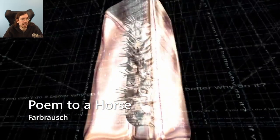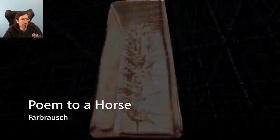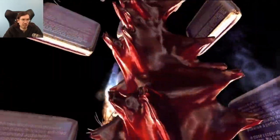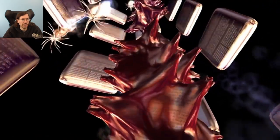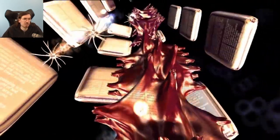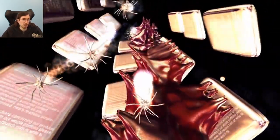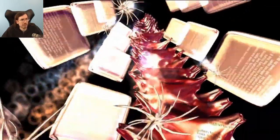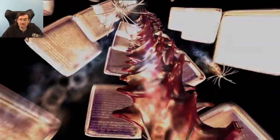In 2002 we had another very cornerstone release in the 64k category: FR019 'Poem to a Horse' by Farbrausch. They pretty much followed up what they achieved with 'The Product' and tried to make another big 64k. They achieved very good results at Mekka Symposium 2002 with this one.